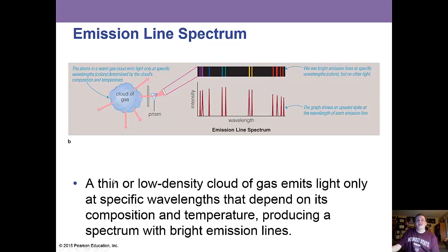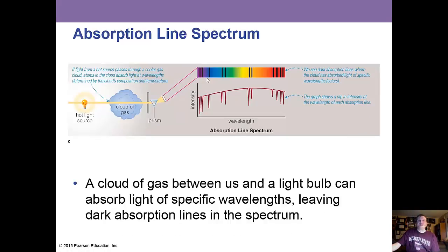In an emission line spectrum, a thin or low-density cloud of gas emits light only at specific wavelengths that depend on its composition and temperature, producing a spectrum with bright emission lines. In the absorption spectrum, you have a hot source going through a cloud of gas, then through a prism. The cloud absorbs certain specific wavelengths, leaving dark lines. Most stars have absorption lines in them.